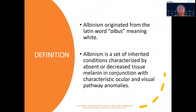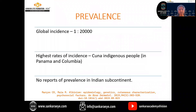The word albinism is originated from the Latin word albus, meaning white. Albinism is a set of inherited conditions characterized by absent or decreased tissue melanin in conjunction with the characteristic ocular and visual pathway anomalies. According to various studies, the global incidence is about 1 in 20,000. The highest rates of incidence have been recorded in Panama and Colombia. There are no reports of prevalence in the Indian subcontinent.